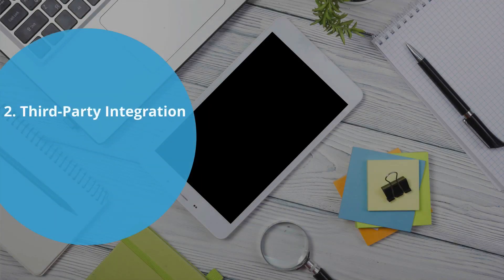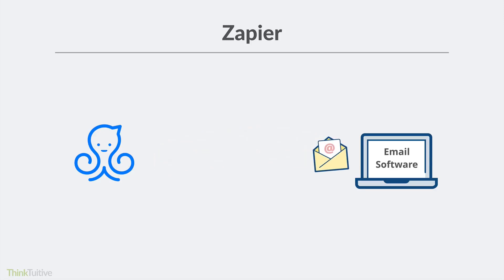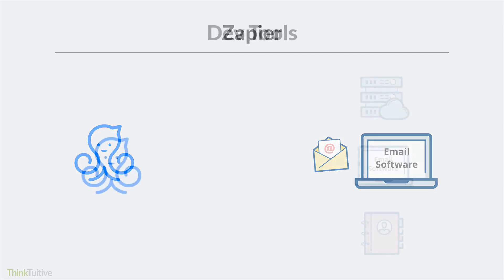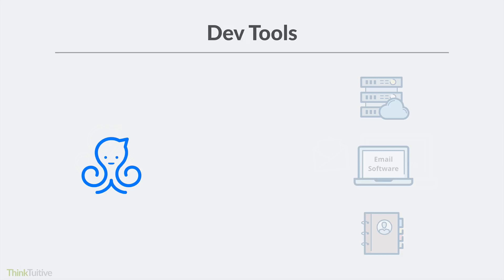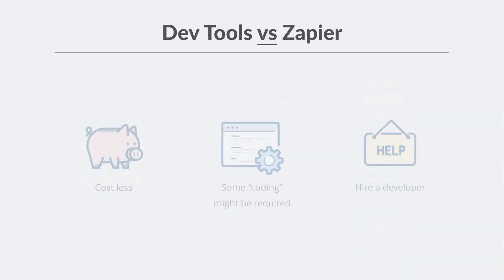Next is third-party integration. ManyChat has a built-in integration with Zapier. It's basically a tool that allows one app to talk to another app, allowing you to transfer data and automate tasks. For example, you can collect an email address using your Messenger bot and feed this information directly into your email marketing software. ManyChat also has a feature called DevTools, which allows you to transfer data from ManyChat to an external database and other third-party tools such as your email marketing or CRM. Using DevTools costs a lot less than Zapier.